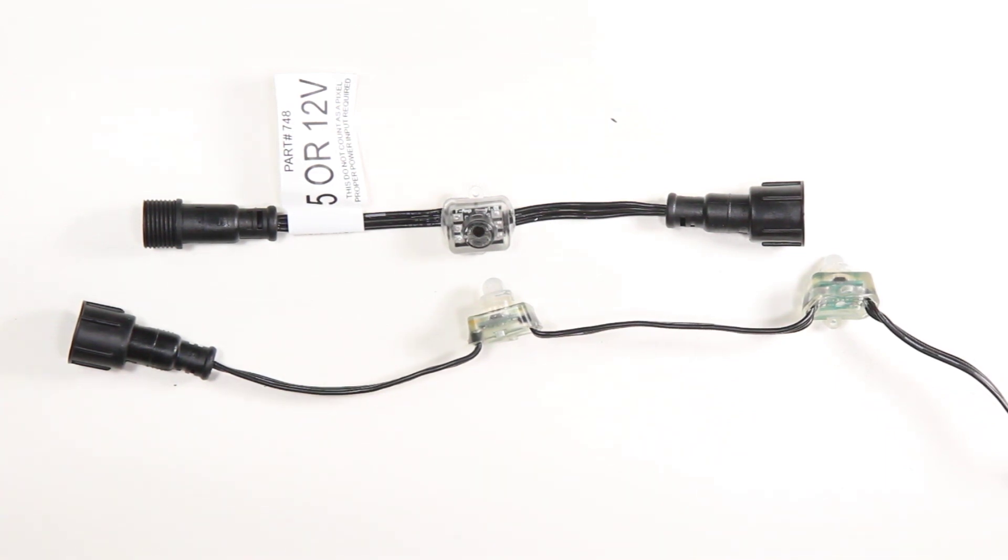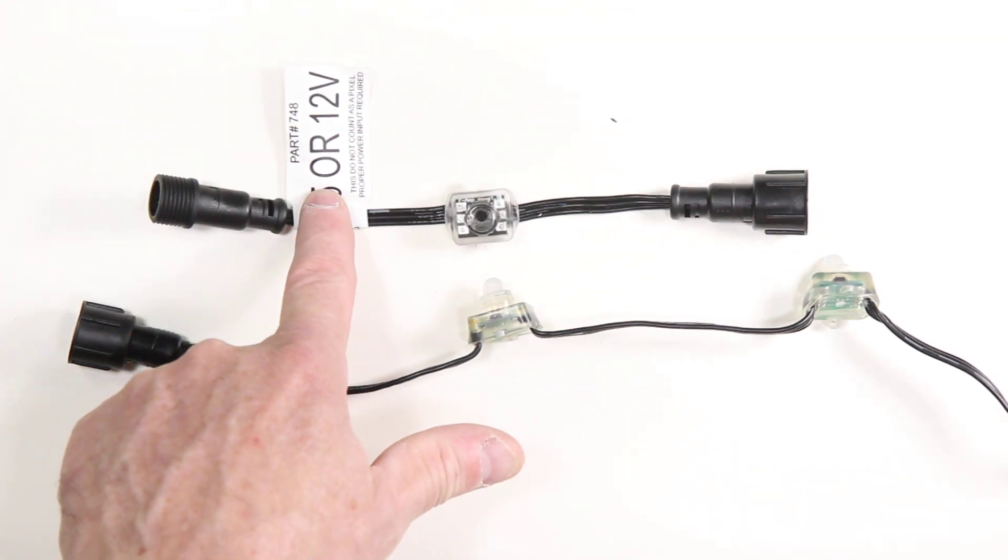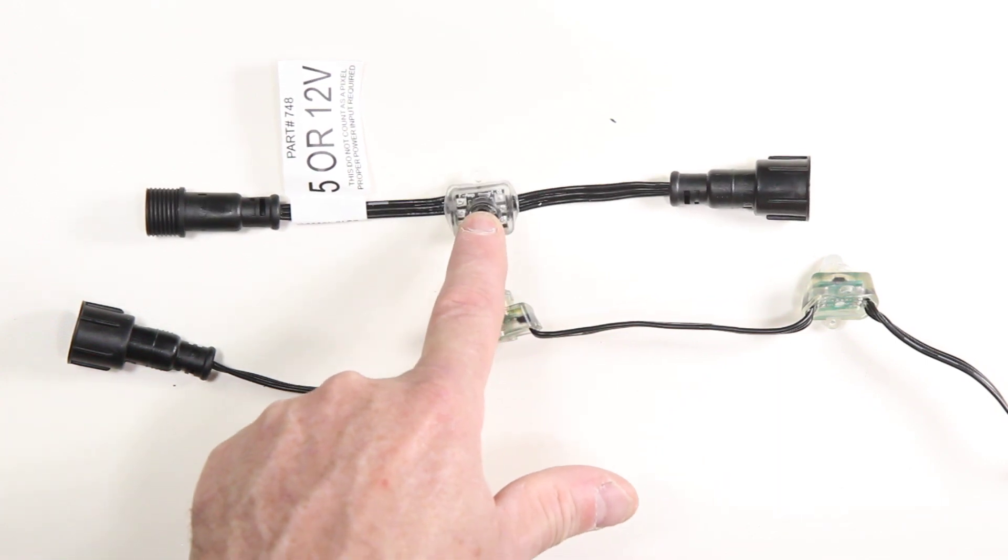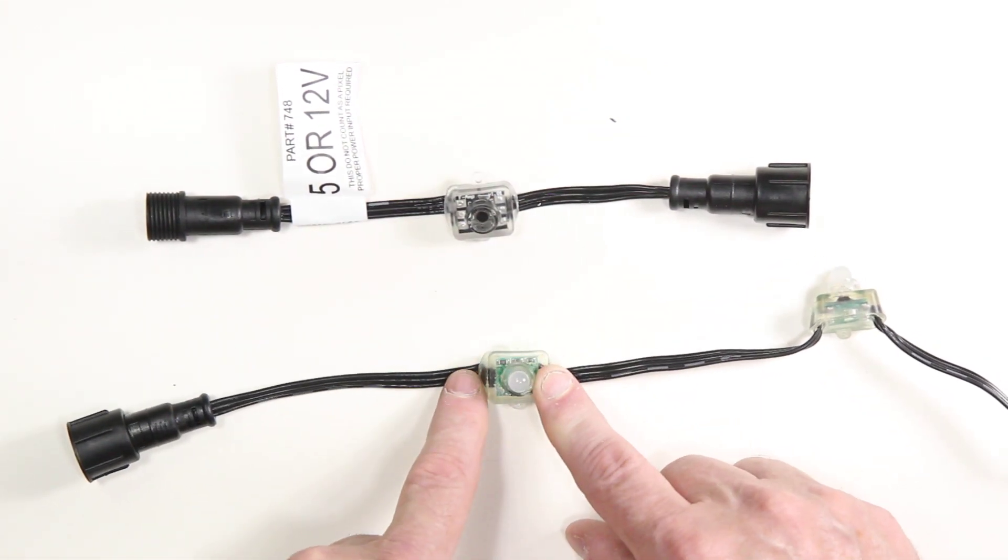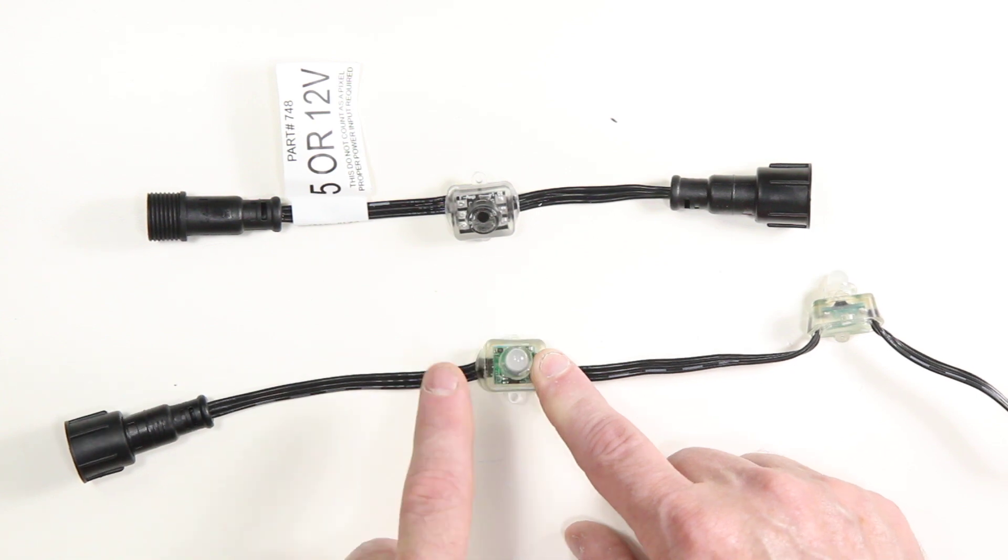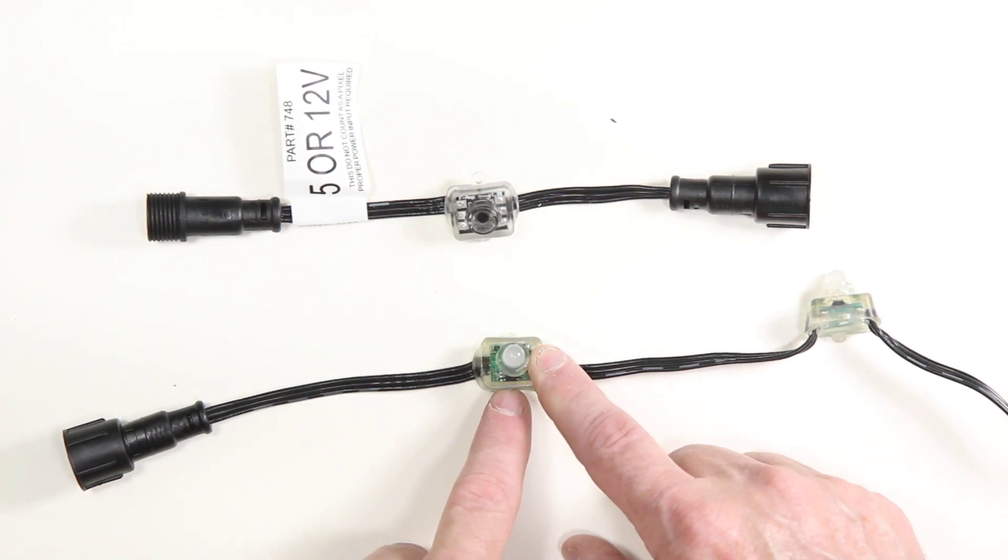Why use 5 volts over 12 volts? Because 5 volts is closer to the actual voltage of the pixels that we're using. In this pixel, we have an LED and we have computer chips that run the actual controlling of the pixel.